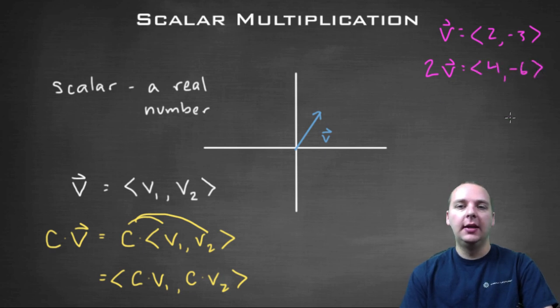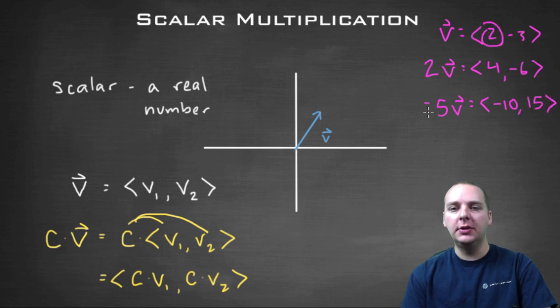If you took negative five times v, then that would be the vector <-10, 15>, because negative five times two is negative ten, and then positive fifteen, which is negative five times negative three.